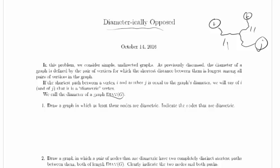Problem 1: Draw a graph in which at least three nodes are diametric. Indicate the nodes that are diametric. We always want to try and start small, so let's just draw our three nodes. We know we need three nodes that are diametric and we know that the shortest path between each of these nodes and something else, maybe one of the other nodes listed here, is the diameter of the graph.